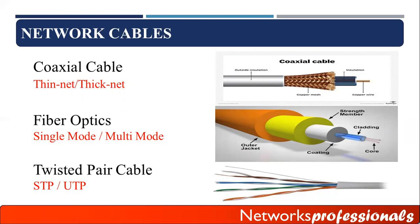The most commonly used cable in local area networks is twisted pair cable. It supports very high speed and is a very economic solution. It is called twisted pair because inside this cable there are eight wires divided into four pairs, and these pairs are twisted with each other to prevent distortion or data loss. This cable has two main types: STP (Shielded Twisted Pair) and UTP (Unshielded Twisted Pair).